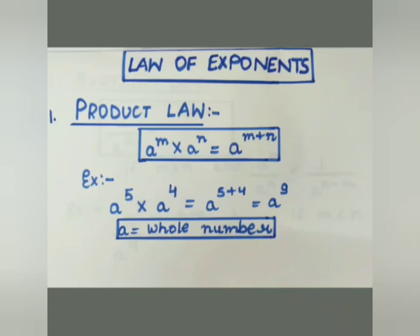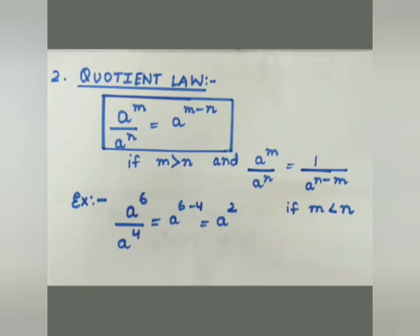The second law is the Quotient Law. When a number in exponent form is divided by another number also in exponent form, both numbers must have the same base. Here again the base is the same — that is a, which can be any whole number. The smaller index is subtracted from the bigger index.